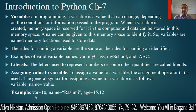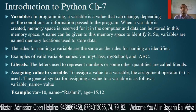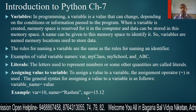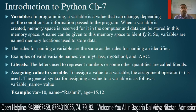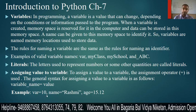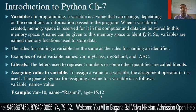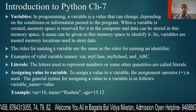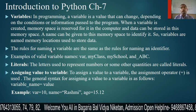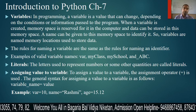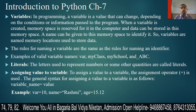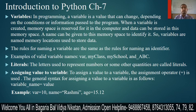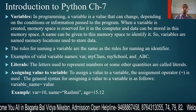So here we have three variables: VAR, name, and age. The equal sign is used to store values 10, rashmi, and 15.12 respectively. This means variable values can change, and variables are used to store values. Variables are named memory locations used to store data.